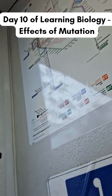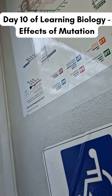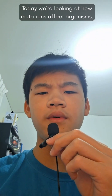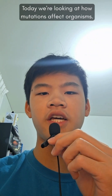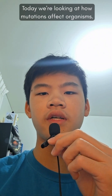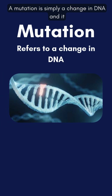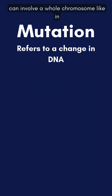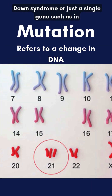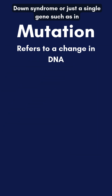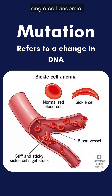Day 10 of Learning Biology: Effects of Mutations. Today we're looking at how mutations affect organisms. A mutation is simply a change in DNA, and it can involve a whole chromosome, like in Down syndrome, or just a single gene, such as in sickle cell anemia.